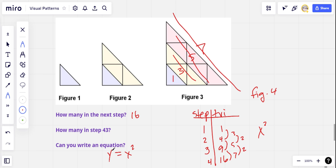All right. All we need to do is figure out how many in step 43. And that shouldn't be too tough. We're just going to have to take the figure number 43 and square it. And that is 1,849 triangles in figure 43.